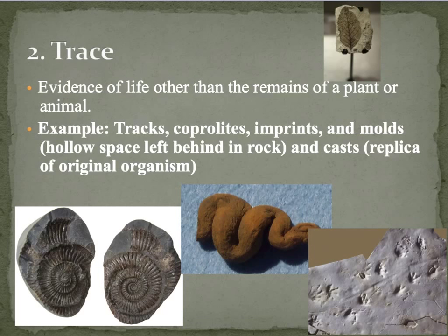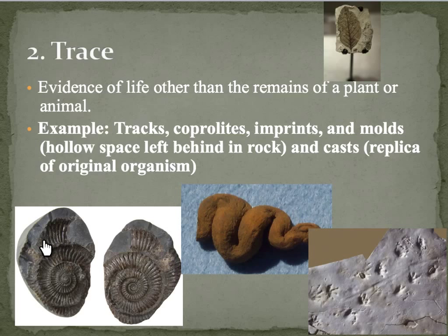A trace fossil is just the evidence of life other than the actual original remains — the body of the plant or the animal. So things like tracks, coprolites, or poop, as I like to call them. And then we have some imprints, or you could have a mold or a cast. A mold is the hollow space left behind in the rock, and the cast is the replica created in the rock by the mold, and it looks just like the original organism did.